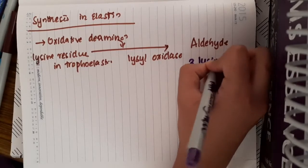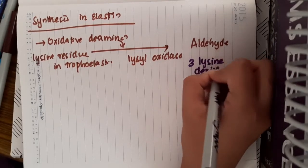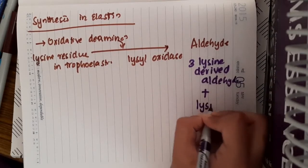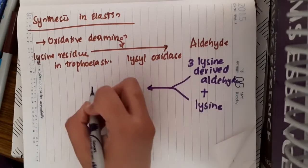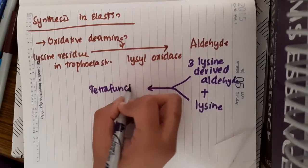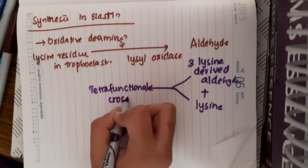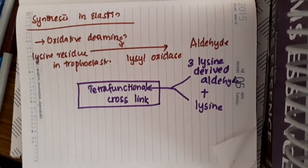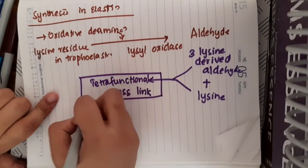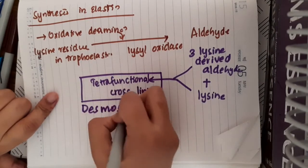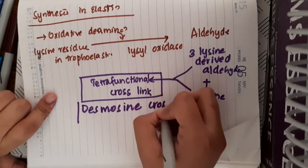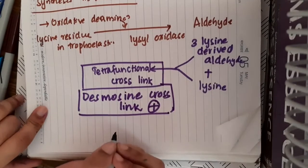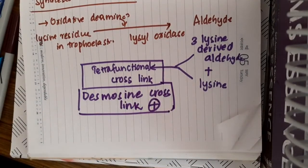These three lysine-derived aldehydes combine with one more normal lysine and this forms a tetrafunctional cross-link. This tetrafunctional cross-link is unique to elastin and is not present in collagen. This tetrafunctional cross-link occurs with the help of desmosine, and desmosine cross-linkages are one of the important features of elastin.